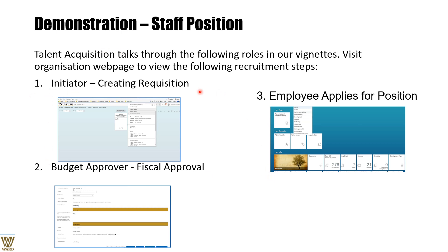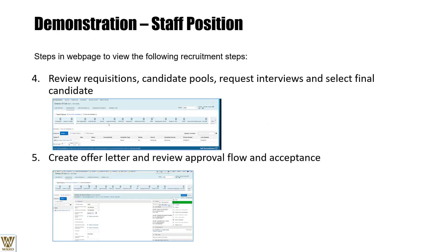In the web portal demonstration: the first thing is creating the requisition. The initiator creates the requisition and it automatically populates into budget approval to check if funding is available. If there are budget shortfalls, the organization must determine if the vacancy is vital enough to allocate funds. Once approved, candidates apply, applications are reviewed in the candidate pool, candidates are compared by experience, offer letters are created, and approvals and acceptances are processed.